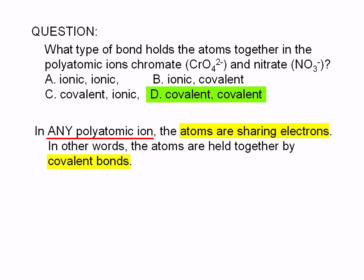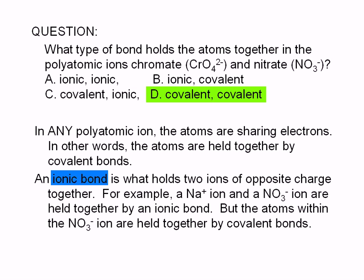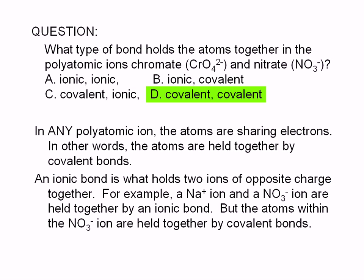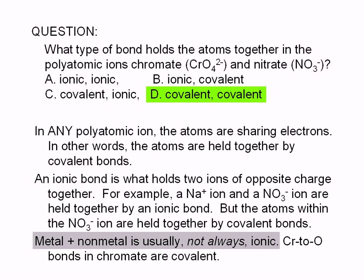An ionic bond is what holds two ions of opposite charge together. For example, a sodium ion and a nitrate are held together by an ionic bond, but the atoms within the nitrate ion are held together by covalent bonds. Furthermore, a metal atom and a non-metal atom do not always form an ionic bond — they usually do, but not in the case of chromium and oxygen in the chromate ion. The Cr to O bonds in the chromate ion are covalent.